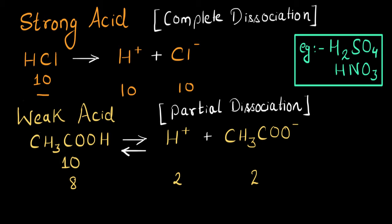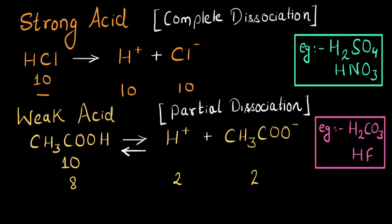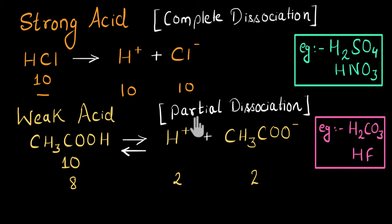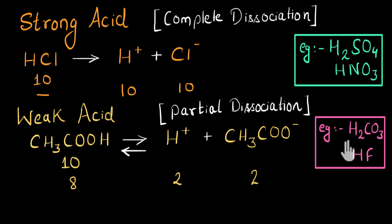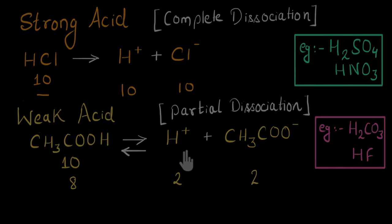Examples of weak acids, apart from acetic acid, are H2CO3 and HF, along with some others. These acids only go through partial dissociation — even if they dissociate, most of their ions will combine back to form the acid molecule, and that's why we get very little amount of H+ ions.